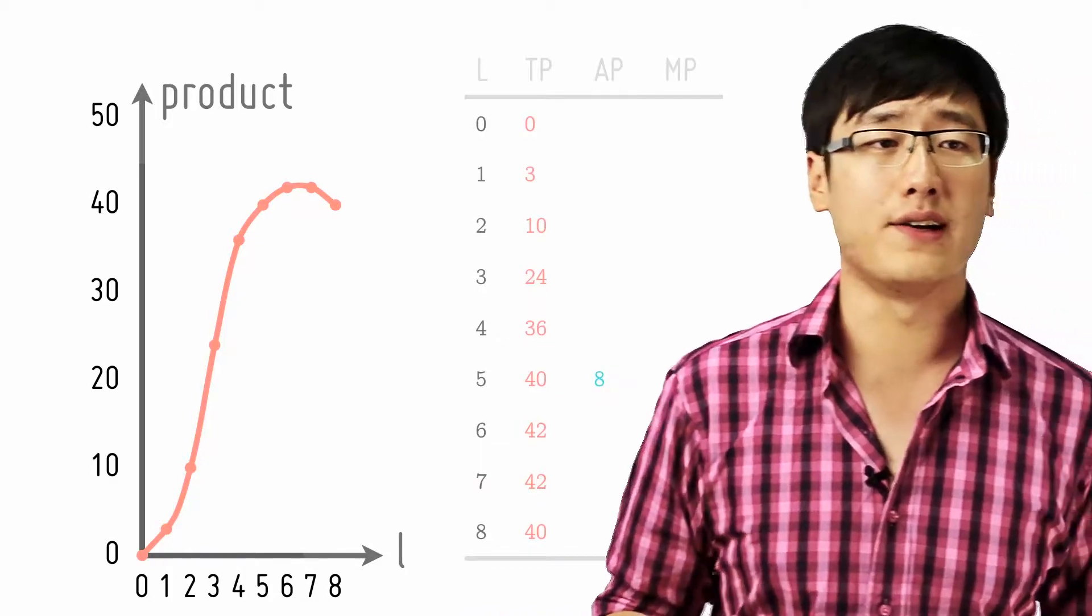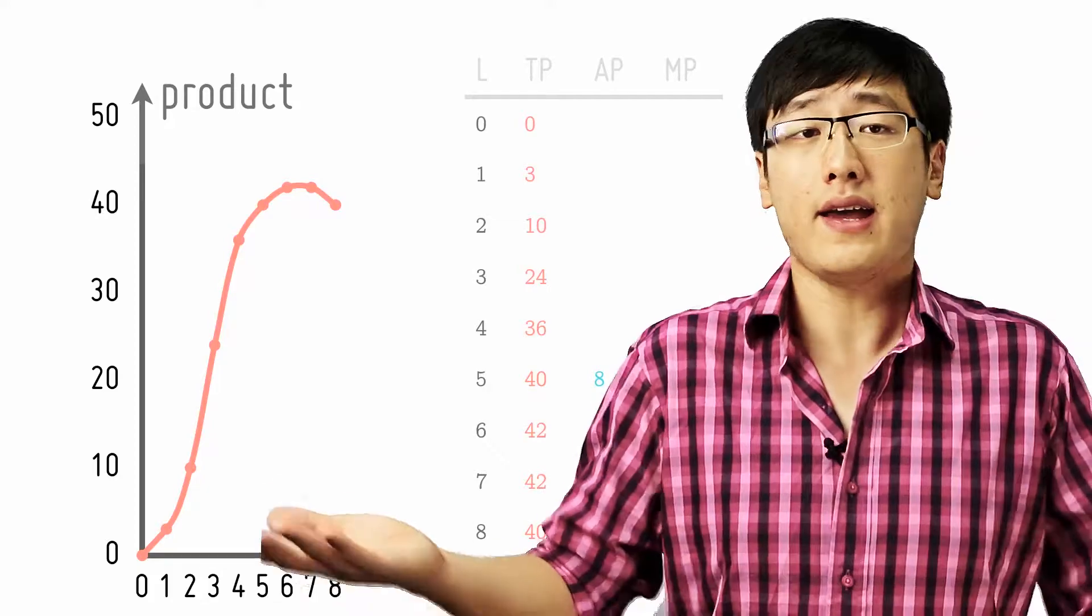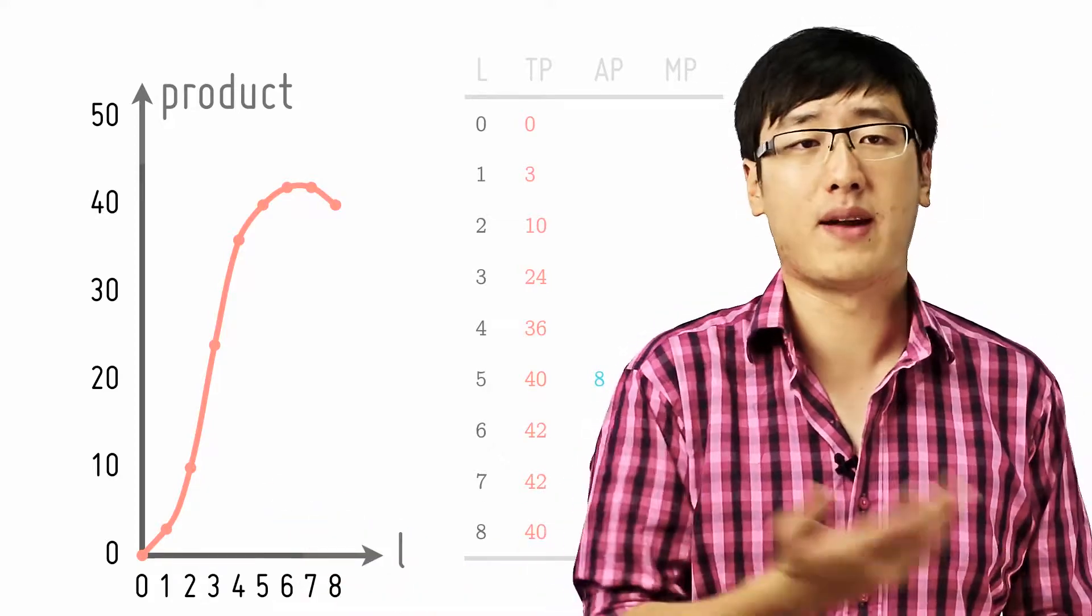Now take for example when 5 workers produce 40 units of iPads. So what is the average amount that each worker produces? 8. 40 divided by 5 equals 8.